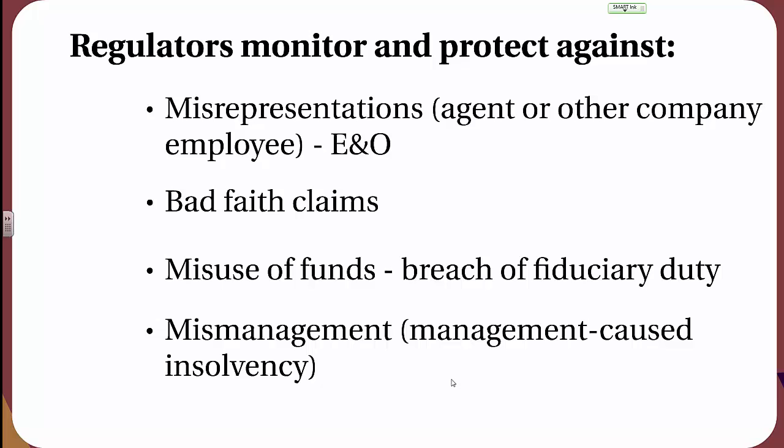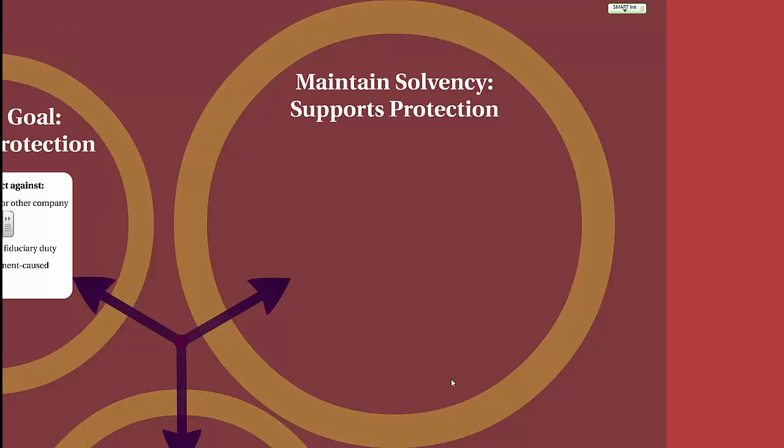Mismanagement or management-caused insolvencies are monitored by the insurance department. While the insurance business may not be rocket science, it is a complicated business requiring underwriting, claims, and actuarial expertise, as well as appropriate management of funds and personnel. When an insurance company mismanages insurance contracts, it could result in insolvency and the inability to pay claims. An insurance company's obligation to pay claims when policyholders have had some of the worst things happen to them is an incredibly important responsibility that must be protected and monitored.